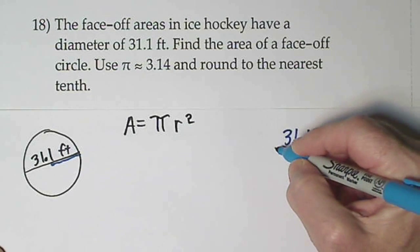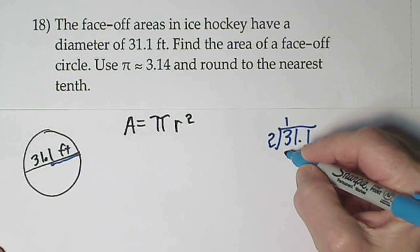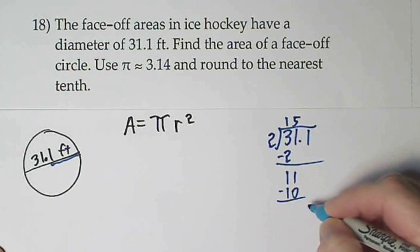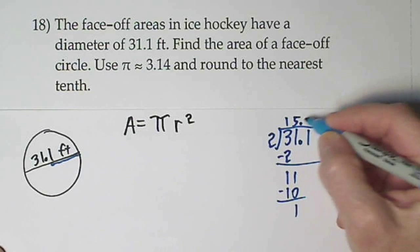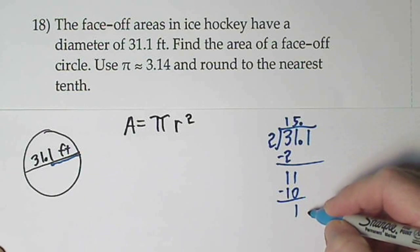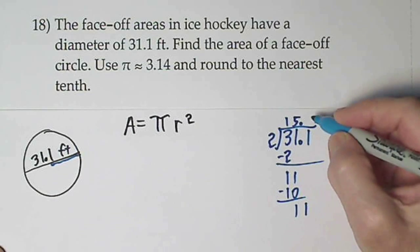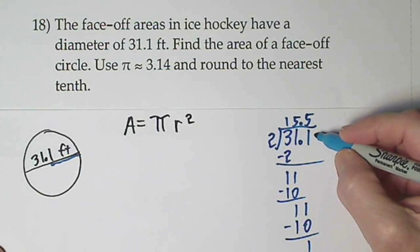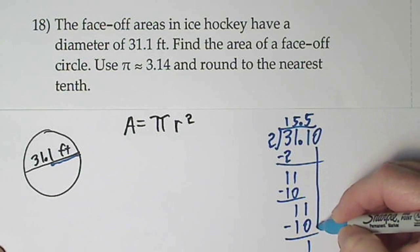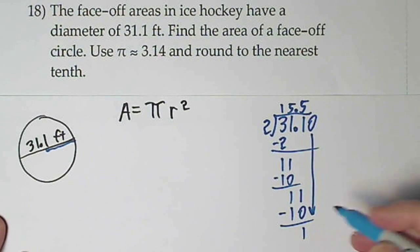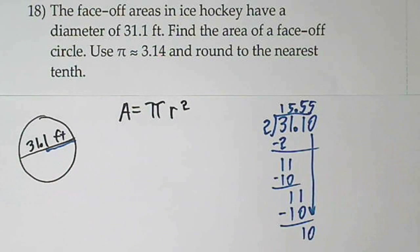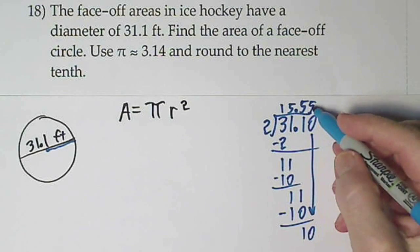31 and 1 tenth divided by 2. There's decimals here so you have to tell the world. Bring down your next digit. And finally, 2 into 10 is 5 times. So half of 31.1 feet is 15 and 55 hundredths.